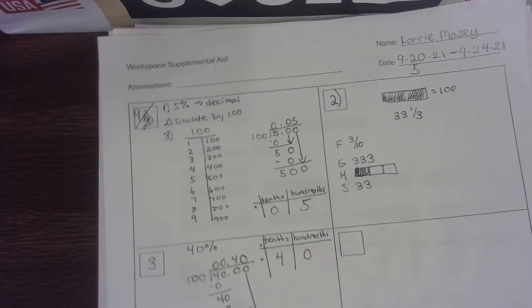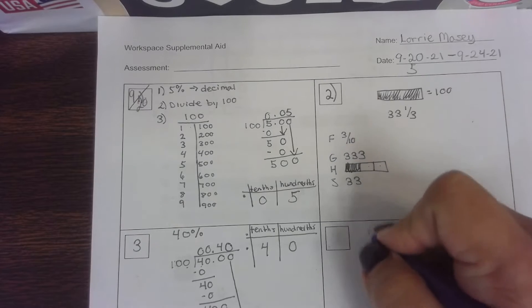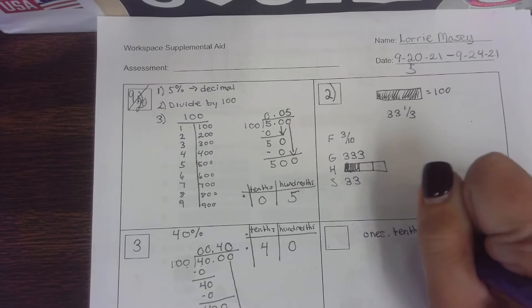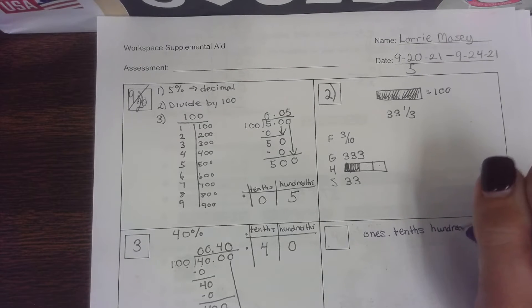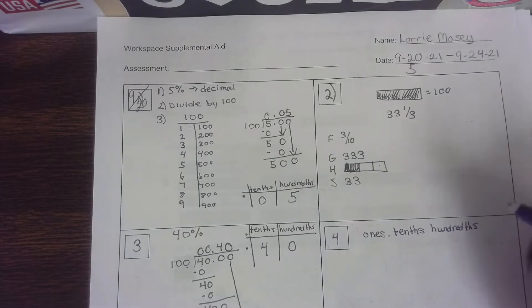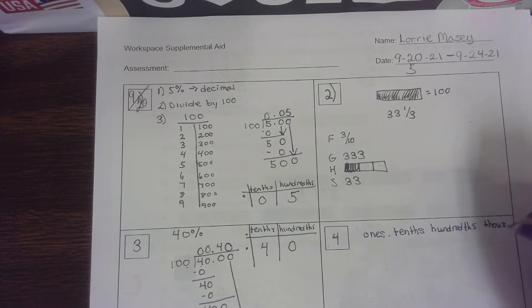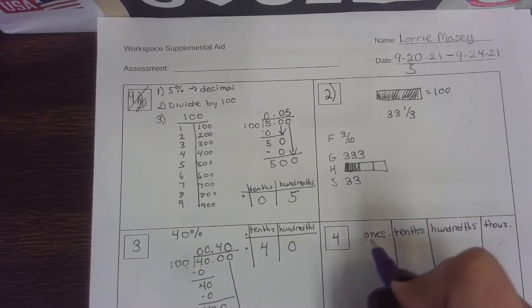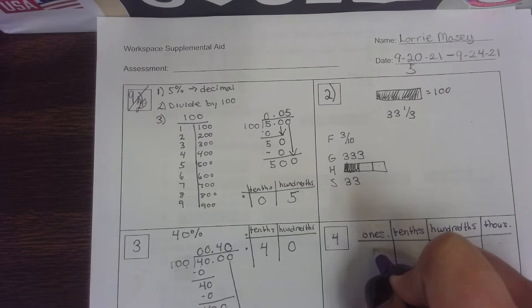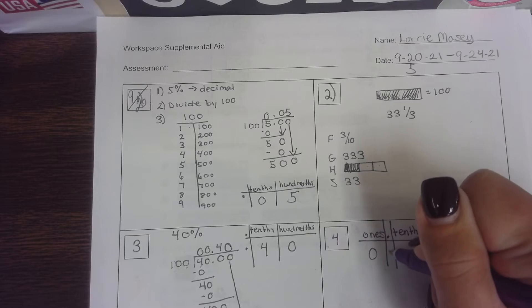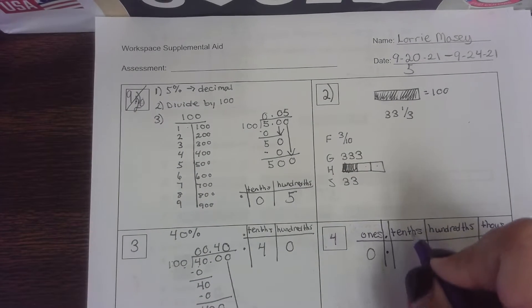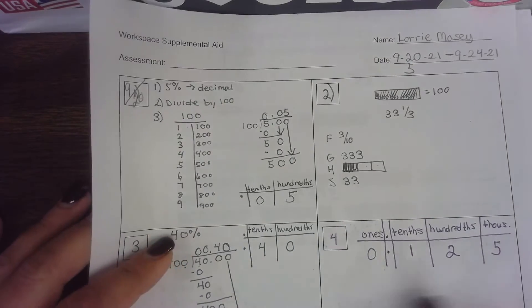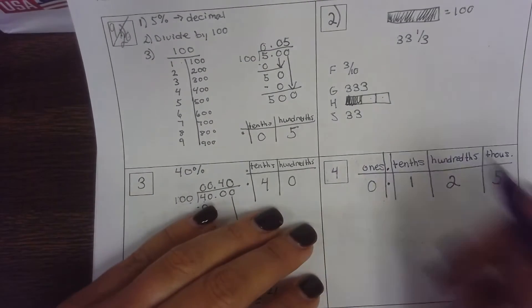I'm going to start by making my place value chart — ones, tenths, hundredths, and thousandths. I do not have anything in the ones place. My tenths is 1, my hundredths is 2, and my thousandths is 5. So when I make my fraction, I'm going to put it over 1,000 — giving me 125 over 1,000.